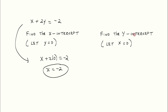The y-intercept, where does it cross the y-axis? Well, we find that out by letting x equal 0. So 0 plus 2y equals negative 2. And that means that 2y equals negative 2. So y equals negative 1.